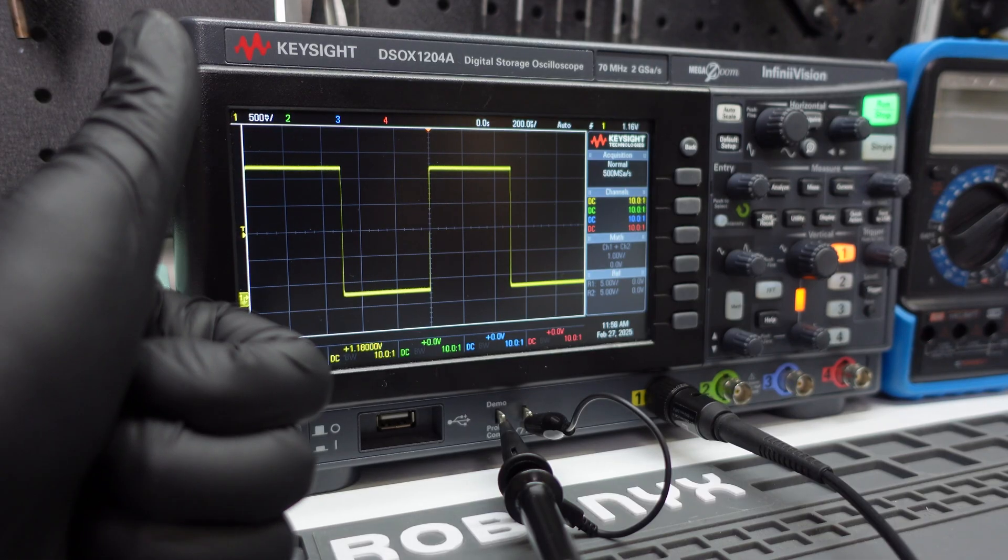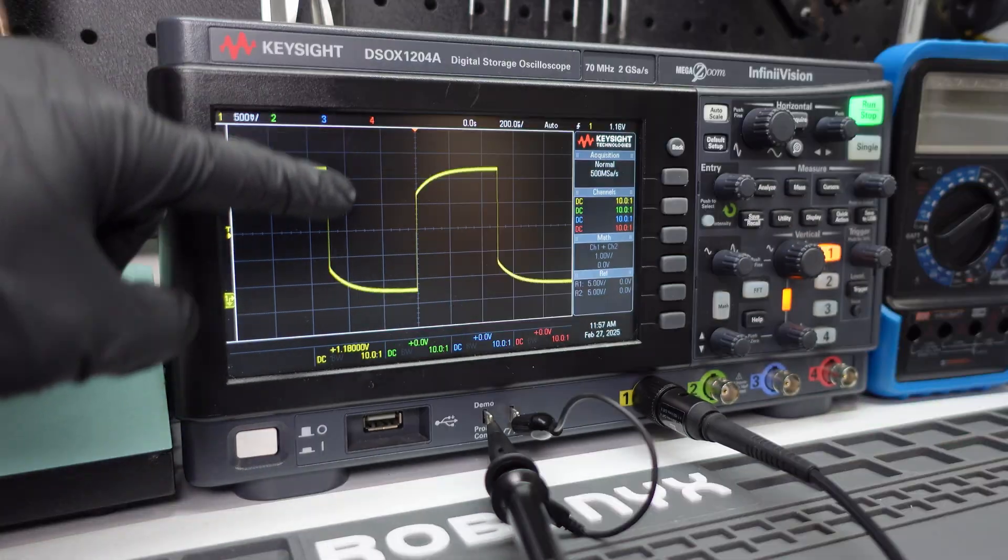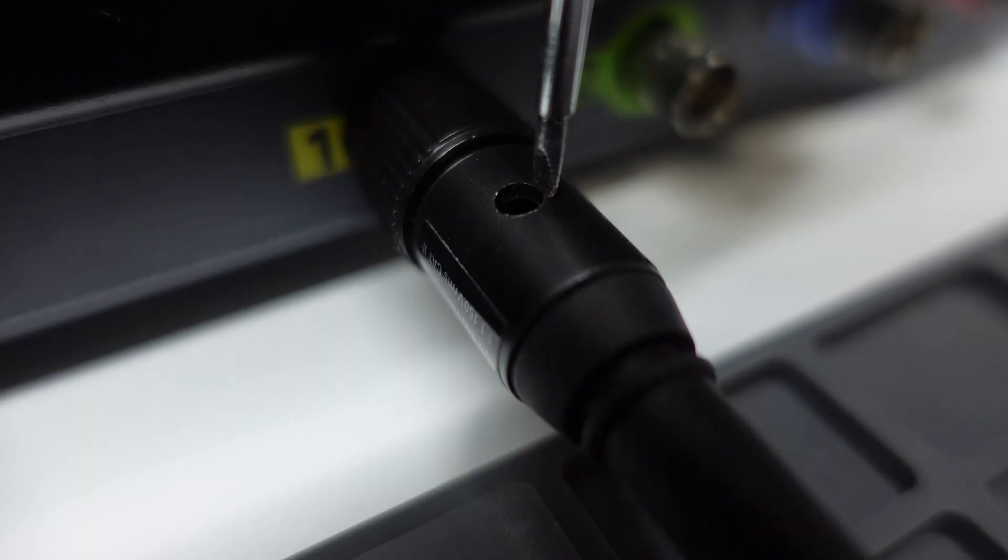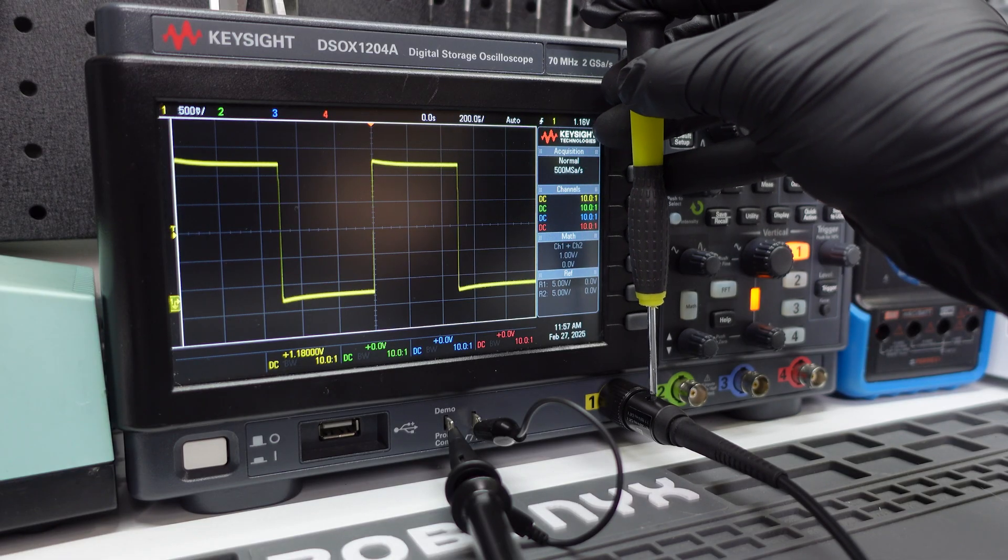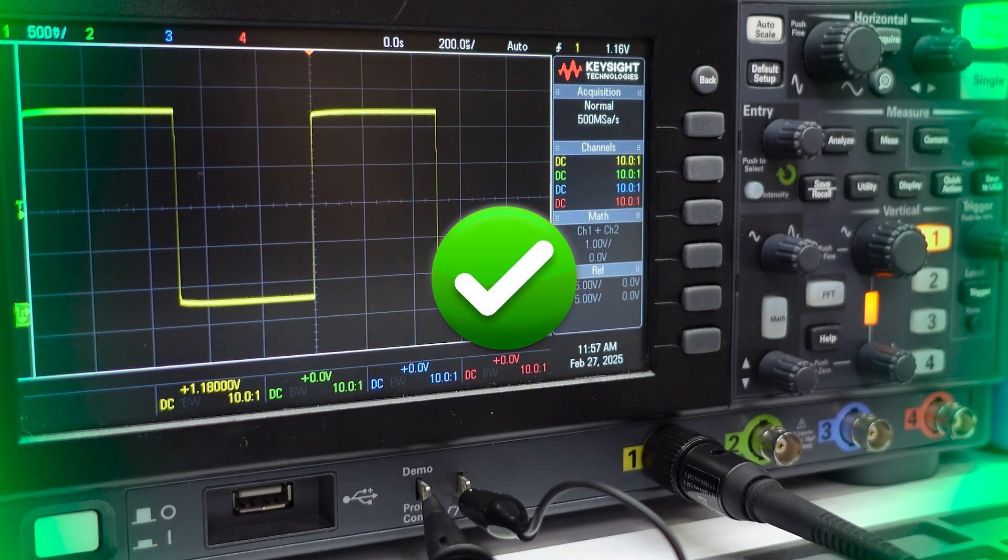If it looks like a nice clean square wave, you're good. If the edges are rounded or slanted, adjust the small screw on the probe until the wave looks correct. Do this every time you switch probes or use a new oscilloscope.